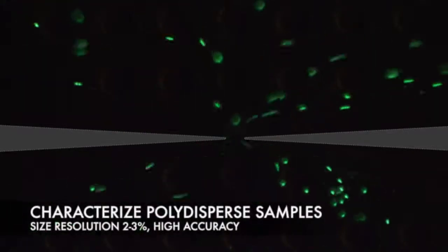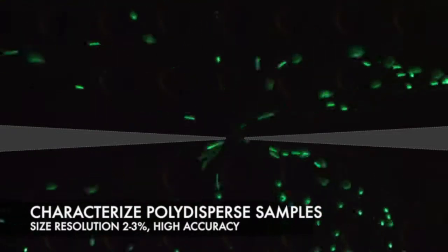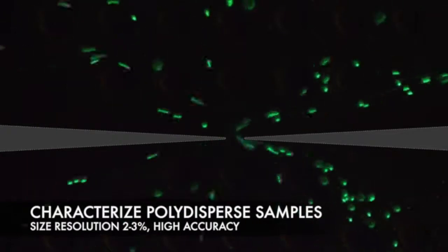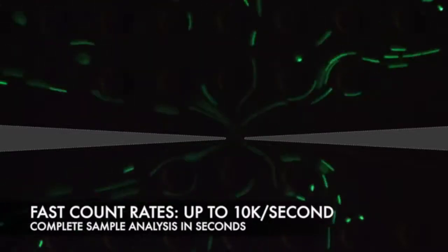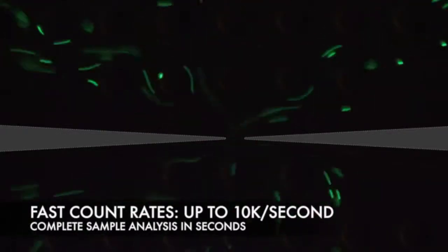The NCS-1 can characterize polydispersed samples with very high resolution, accuracy, and repeatability. It's also very fast and can characterize up to 10,000 particles per second, meaning your complete sample analysis takes place in seconds.